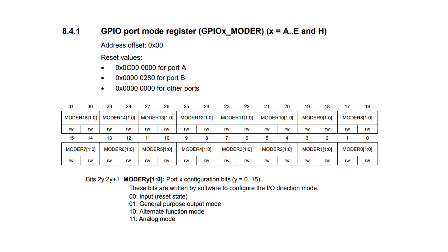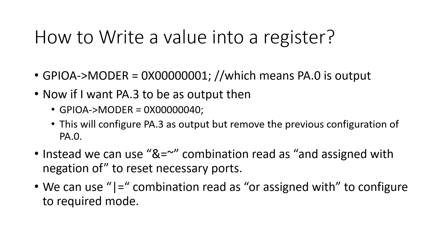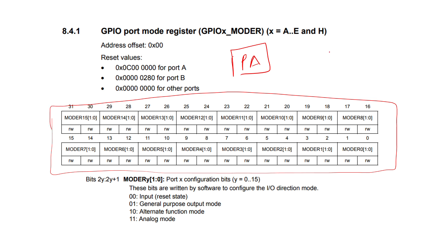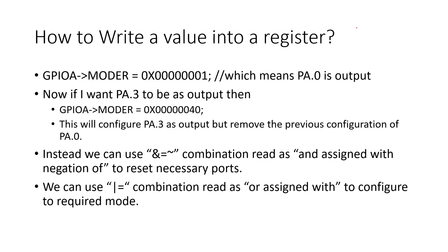The next step is configuring the MODER register. Since we are using only port A, we use the MODER register of port A. For resetting, the particular bits of a pin must be 0,0; for output mode it must be 0,1; for input and reset it is always 0,0. To write data into a register, we use AND-assign with negation logic to reset a particular bit, and OR-assign logic to set a particular bit.